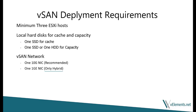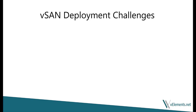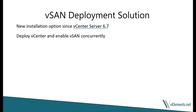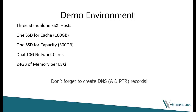Let's revisit the vSAN deployment challenges. vSAN is a vSphere cluster feature and the module is embedded in the kernel of ESXi, so you only need to enable it, but you need to have vCenter server in place. Also, ESXi disks need to be intact and in an unformatted state to be used for the vSAN cluster. From vCenter version 6.7, we have the ability to deploy vCenter and enable vSAN during the deployment process. This way, you don't need any existing vCenter server or virtual infrastructure to install vCenter on. Sounds like a plan.